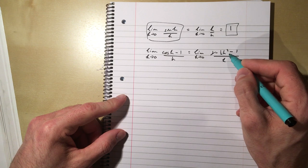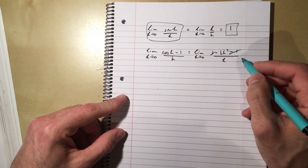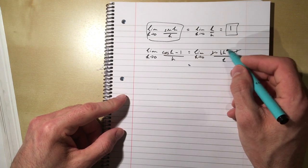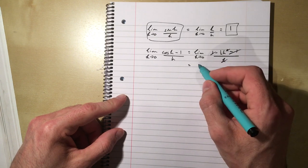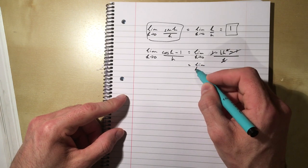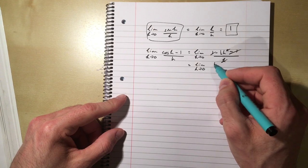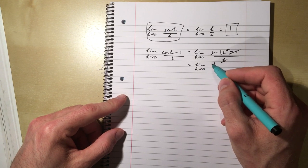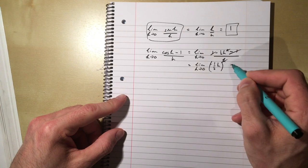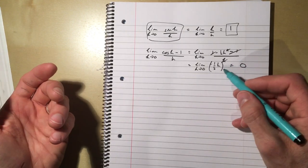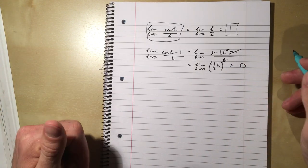So 1 take away 1 cancels out. We get 1 half h squared over h, which is that h squared cancels with h. So this is the limit as h tends to 0 of minus 1 half h. In other words, it's 0. As h gets smaller, minus 1 half h gets towards 0, doesn't it?